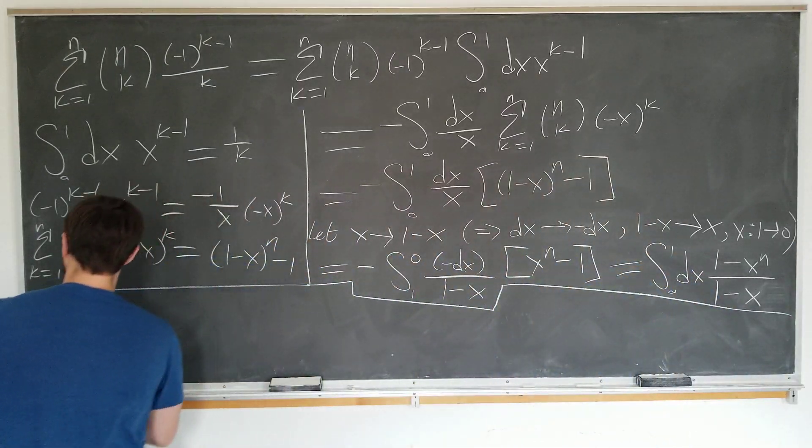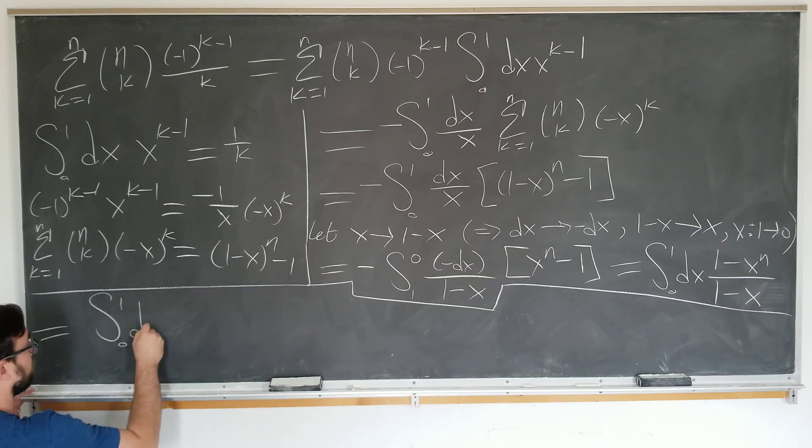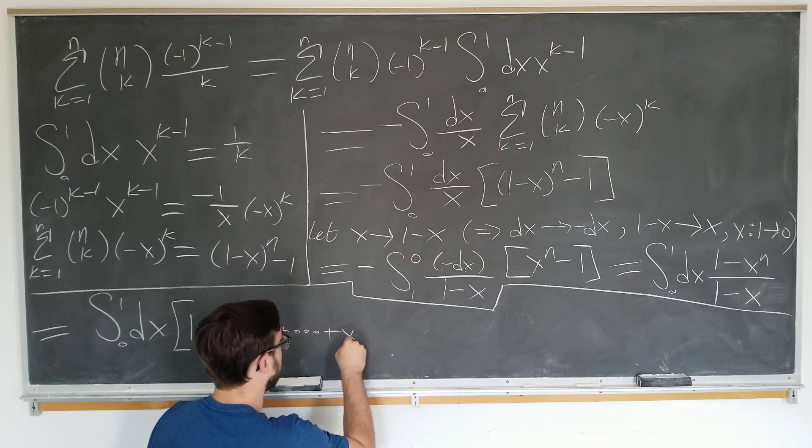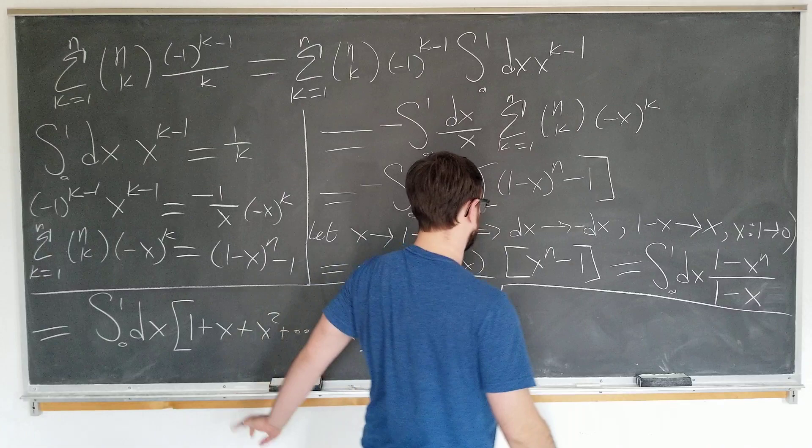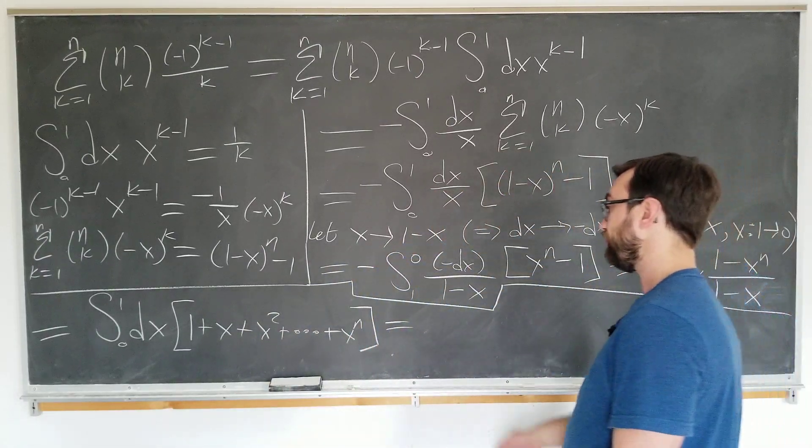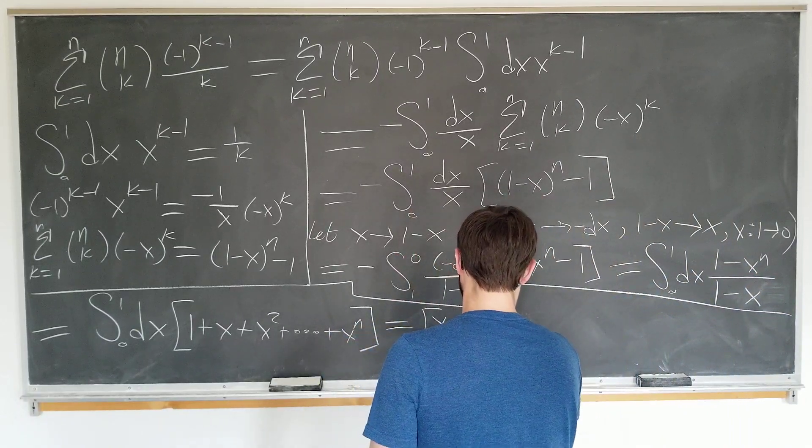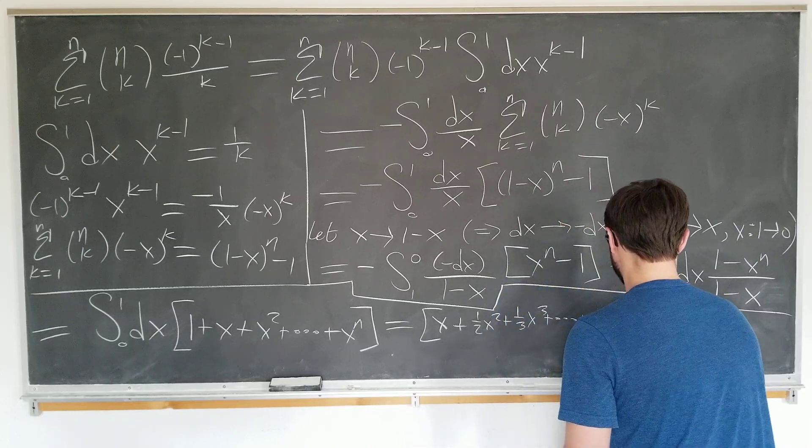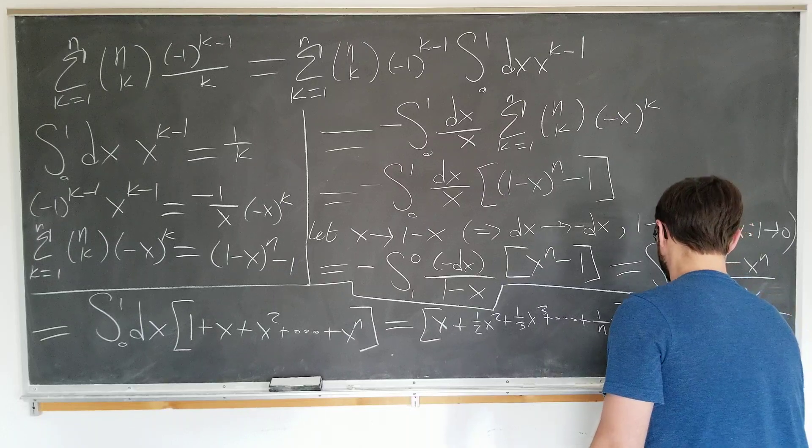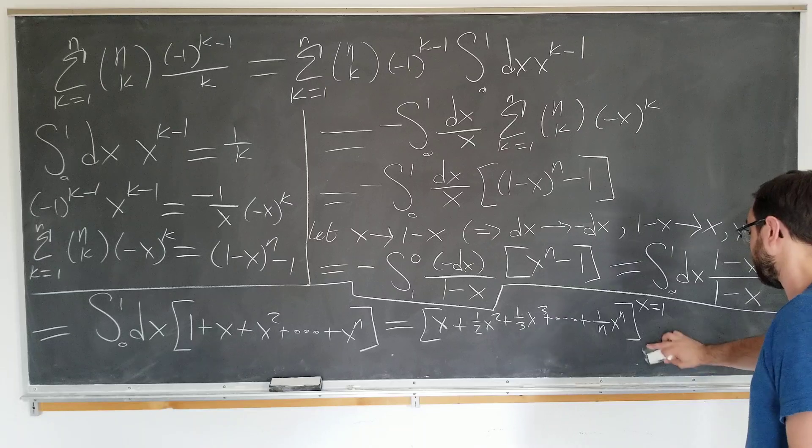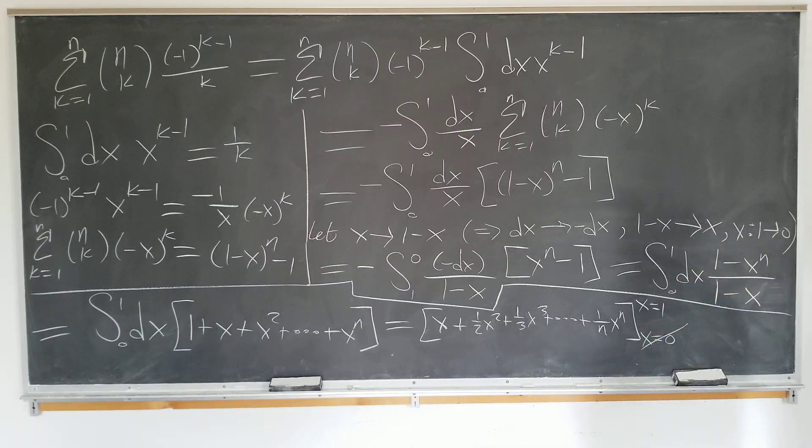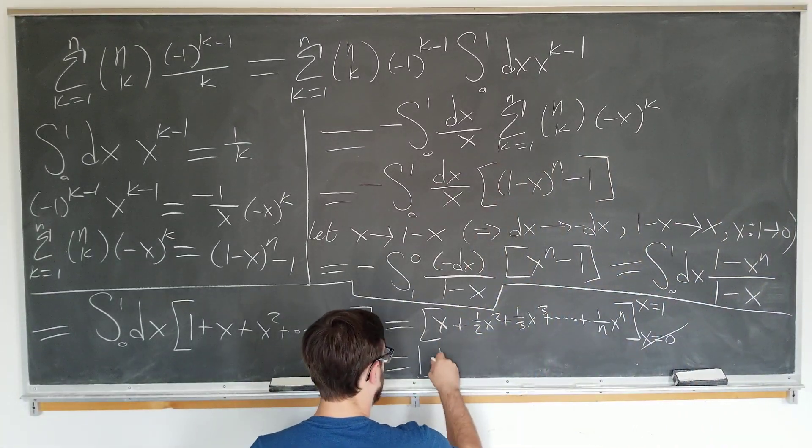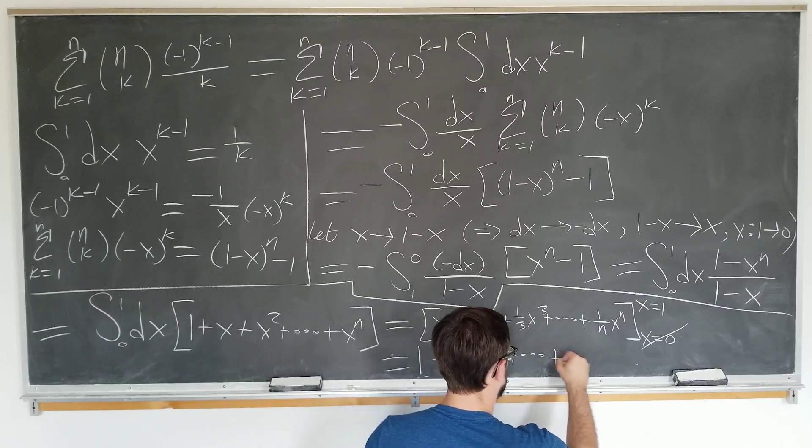Integrating now our result is the integral from zero to one with respect to x of one plus x plus x squared plus higher terms all the way to x to the n, which of course these are all just monomials which we know how to evaluate using the x to the m minus one rule. It's just simply x plus one half x squared plus one third x cubed plus higher order terms until we get to one over n, x to the n, evaluated at x equals one, x equals zero. Again we see that the lower limit cancels out since there's a power of x everywhere so we have to evaluate this x equals one. So it's just one plus one half plus one third plus higher terms all the way to one over n.